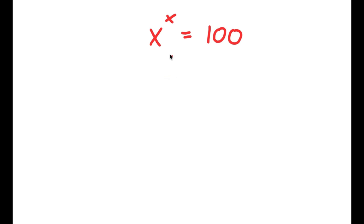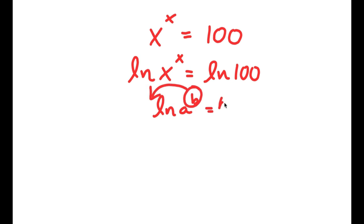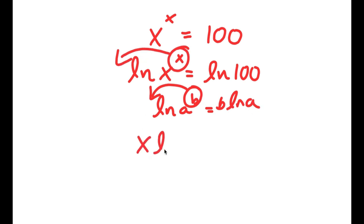In this problem, I have x to the power of x is equal to 100. I'm going to start by taking the natural log on both sides. So I have ln of x to the power of x is equal to ln 100. Using the log power rule — if I have ln a to the power of b, I can move b to the front — I get x times ln x is equal to ln 100.